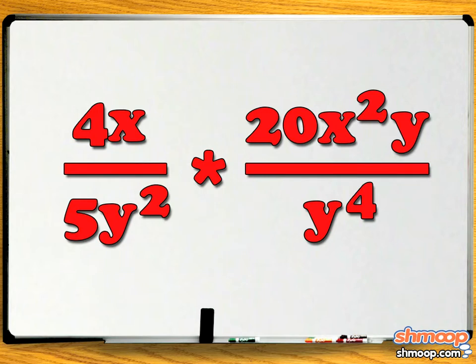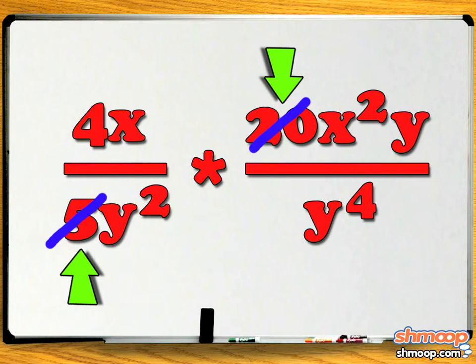Look at our problem. We can see that the 20 in the top of the second fraction and the 5 in the bottom of the first fraction are both factors of 5. We can simplify by dividing 20 by 5 to get 4, and divide the 5 on the bottom by 5 to get 1.